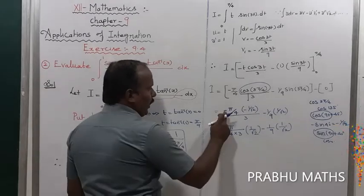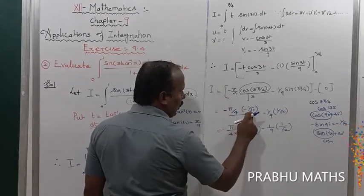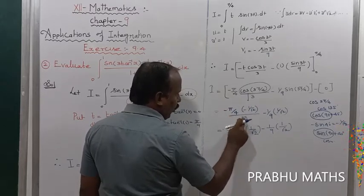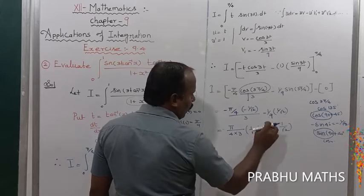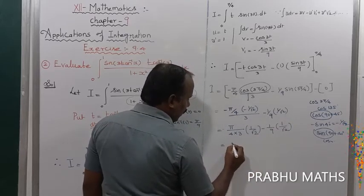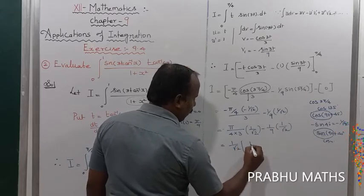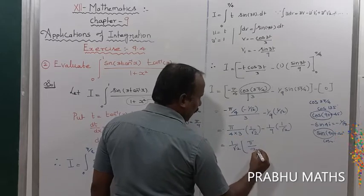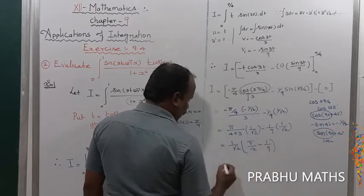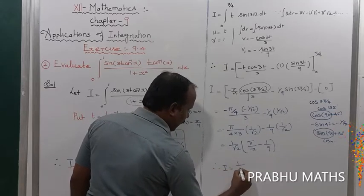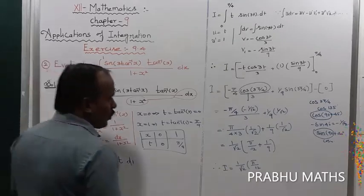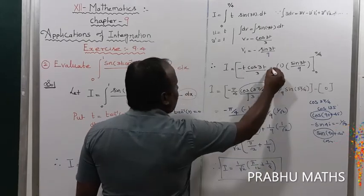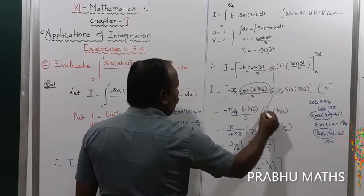After simplification: minus times minus gives plus, so π/4 divided by (3·√2) gives π/(12√2). Combining terms with common factor 1/√2, the final answer is i = (1/√2)·(π/12 + 1/9). So we get the solution.